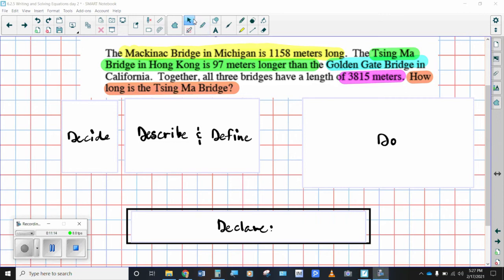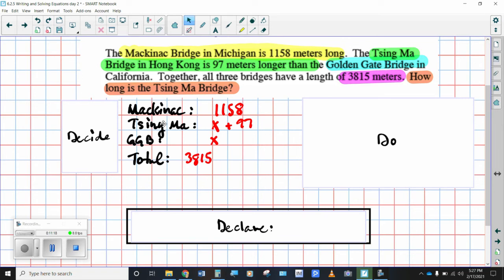All right, let's see if you've got the same thing that I've got. Three different bridges, Mackinac Bridge, Tsing Ma, and Golden Gate Bridge. We know the Mackinac is 1158 meters long. We know that the Tsing Ma is 97 meters longer than the Golden Gate Bridge. So we're going to make X our Golden Gate Bridge length. So Tsing Ma would be X plus 97, and the Mackinac is 1158.